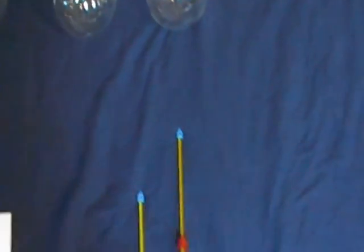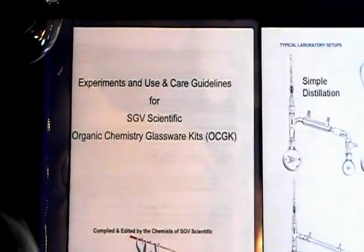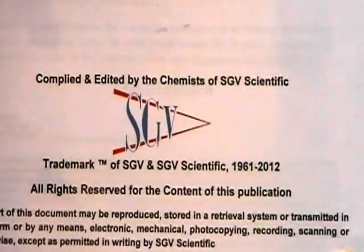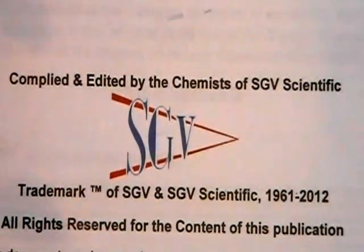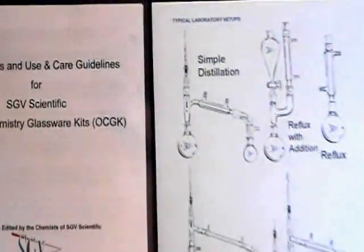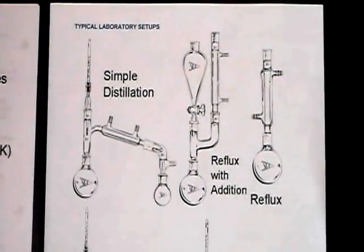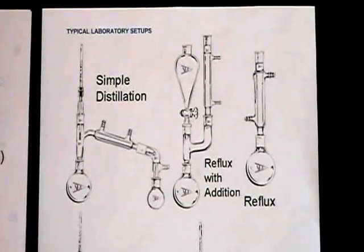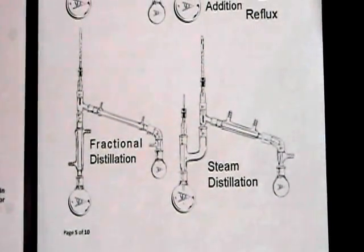This kit also contains an experiment and use and care guidelines for your organic chemistry kit. As we are chemists at SGV, we've compiled this with great care to make sure that all of your organic needs are fully met. In this use and care and experiment guideline, we provide instructions and detailed procedures for performing experiments in the organic chemistry lab as well as in organic chemistry R&D centers.